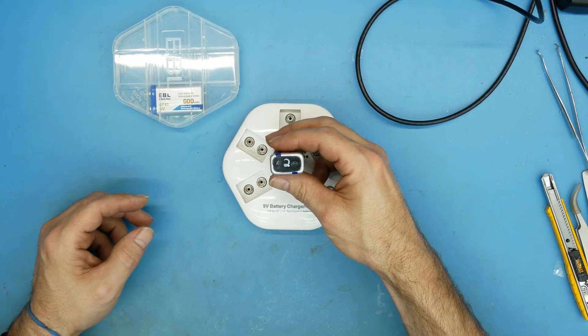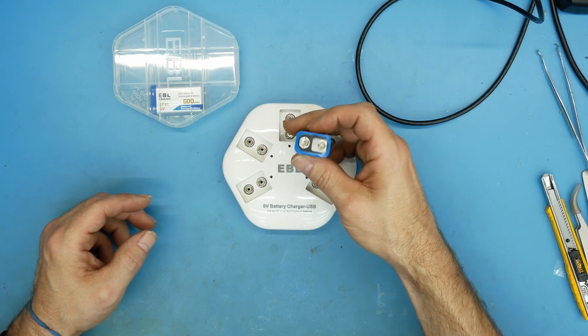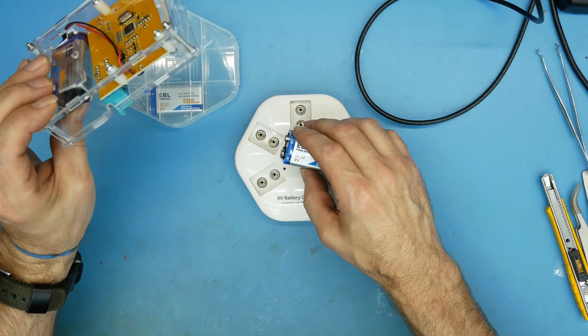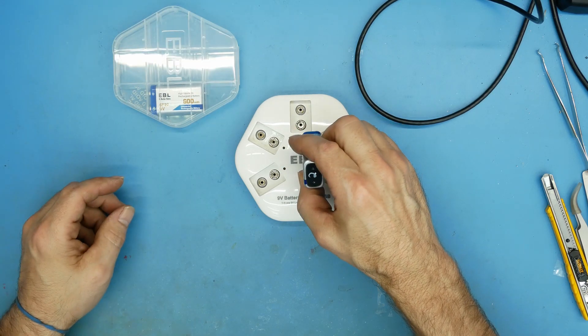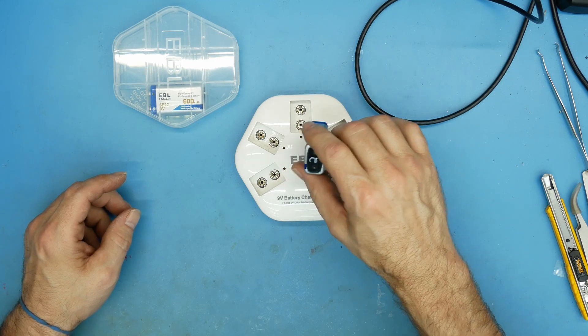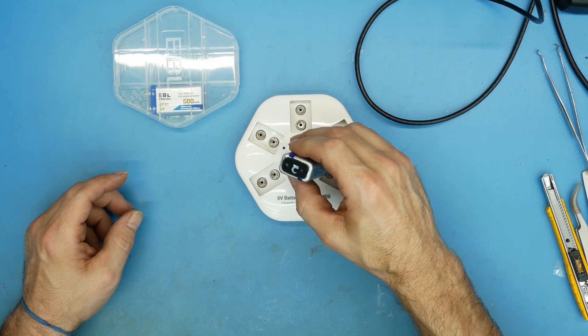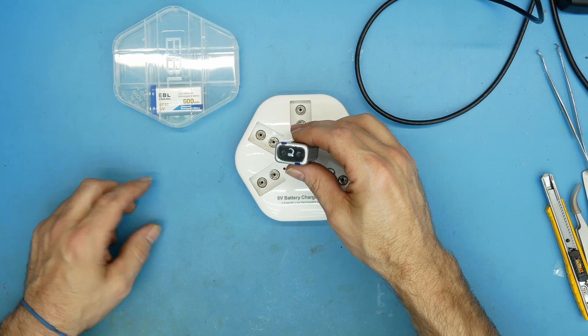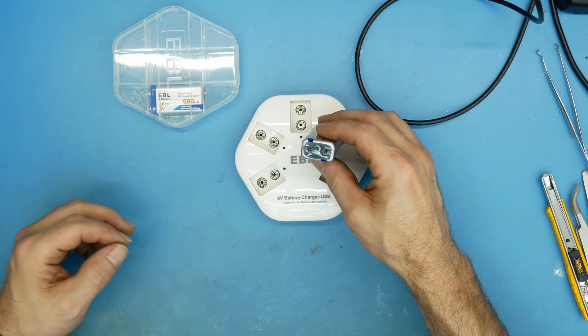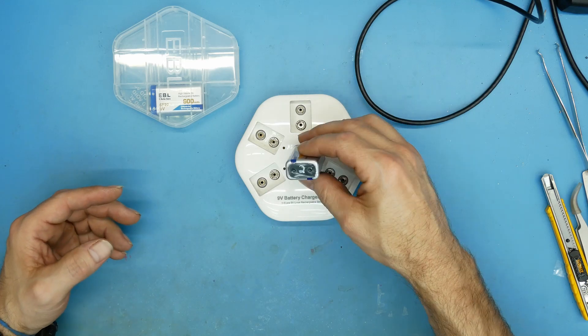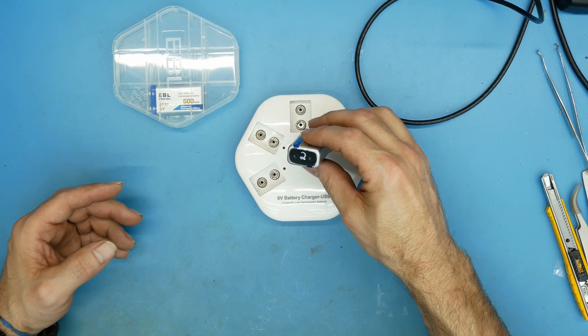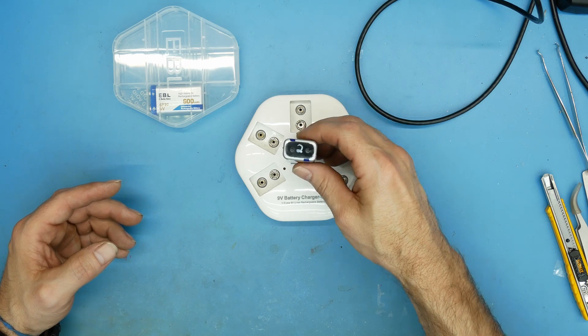One thing I'd like to mention - I'm sure you notice I have a number two on this battery. I put a number on all of them. The reason why I do that is as I'm using them, I try to cycle through. Like if I use this one up, I try to go to number three unless it's already being used, so I'm not constantly using the single cell and just burning up that one cell.